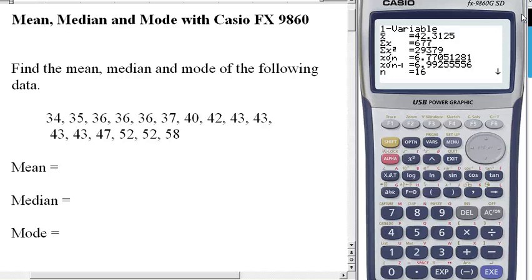And there it is. This symbol here, X bar, is the mean: 42.3125. So over here, I will type 42.3, correct to three significant figures.